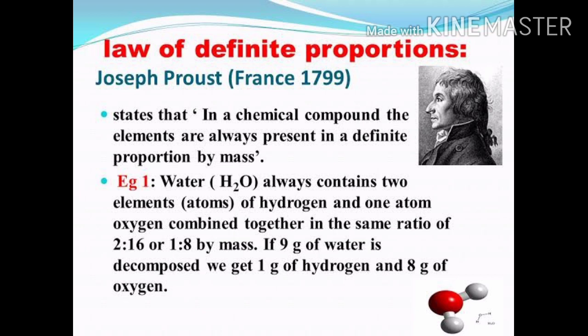Dalton's second postulate states that the number and kind of atoms in a compound is fixed. If the kind of atom is fixed, that implies the compound is always made up of the same elements. Furthermore, the number of atoms of different elements in the compound is also fixed.